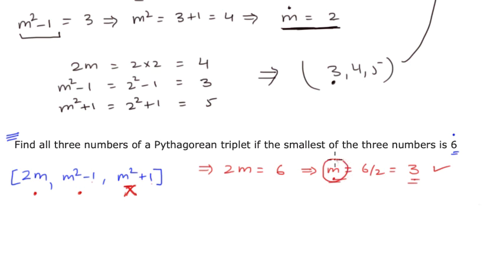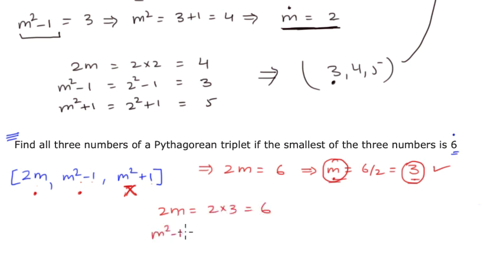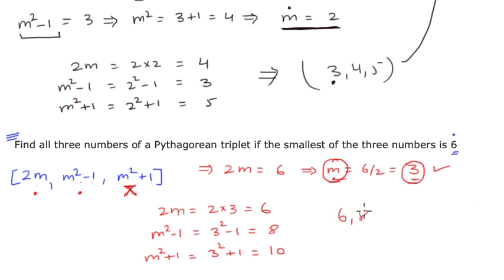With m equals 3, we substitute into the three expressions: 2m becomes 2 times 3, which is 6; m squared minus 1 is 3 squared minus 1, which is 8; and m squared plus 1 is 3 squared plus 1, which is 10. So the Pythagorean triplet is 6, 8, and 10, and the smallest number is 6, which satisfies the problem statement.